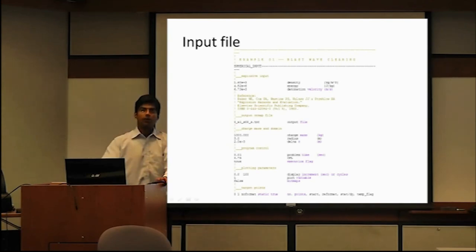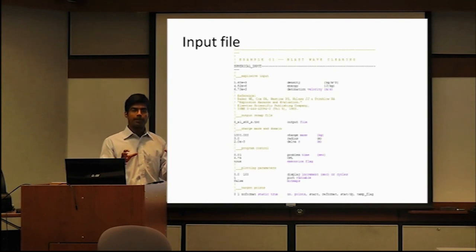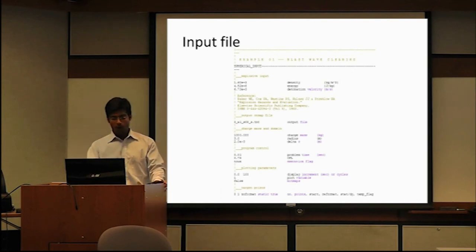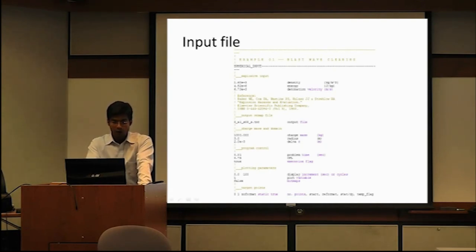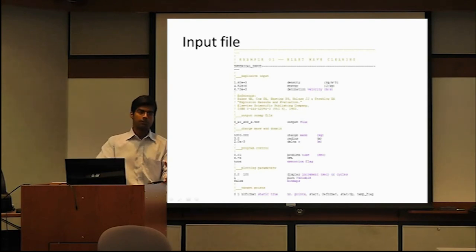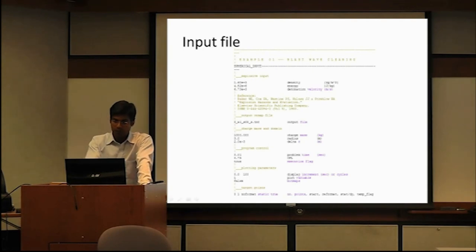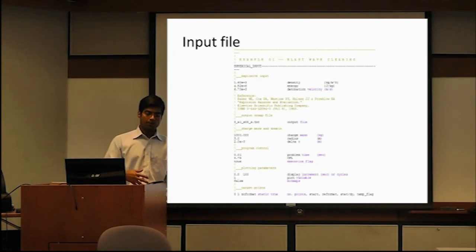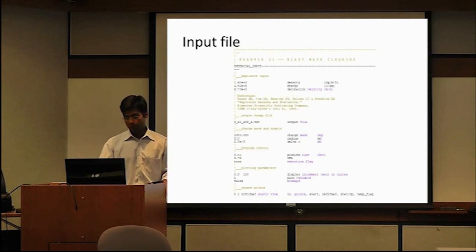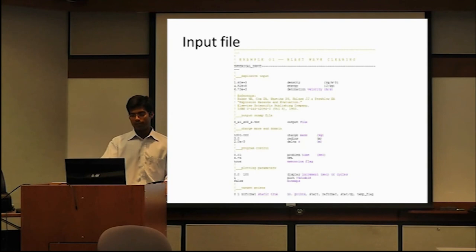Display increments specify the start time and after how many computational cycles you want each window to appear. The plot variable specifies what you'd like to plot — pressure variation, temperature, etc., as described in the manual. For the 1D analysis, we're not plotting anything, so we use option 1. We also use 'false' for printing bitmap image files — we'll do that for the 3D analysis.